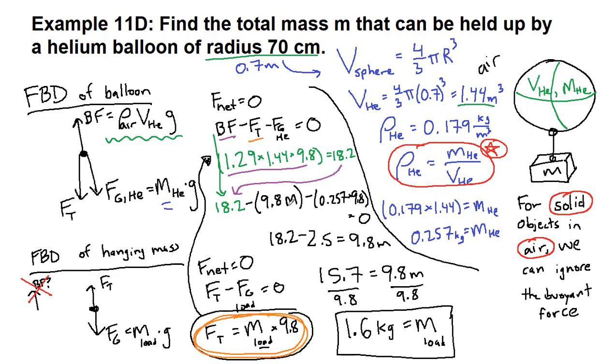So where we had tension, I plugged in the 9.8 times mass. Mass times 9.8 and 9.8 times mass are the same thing. And then for the force of gravity of the helium, that used the mass of helium that we'd gotten off here to the side times 9.8.